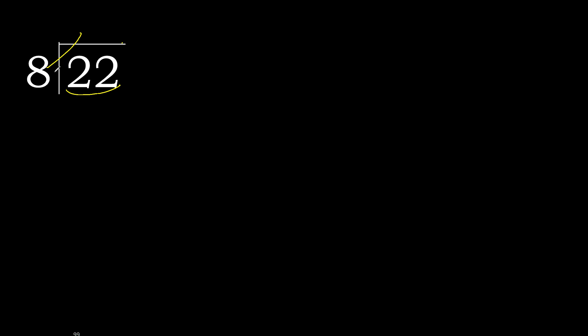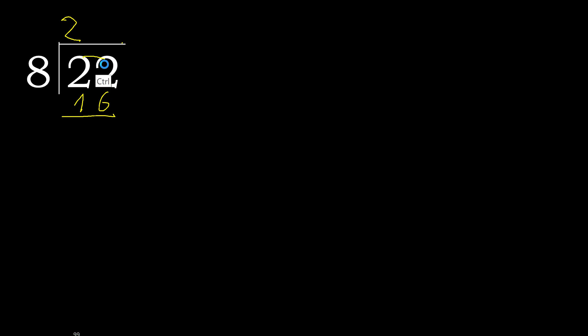8 multiplied by 3 is 24, which is greater. 8 multiplied by 2 is 16, which is not greater. So 22 minus 16 is 6.